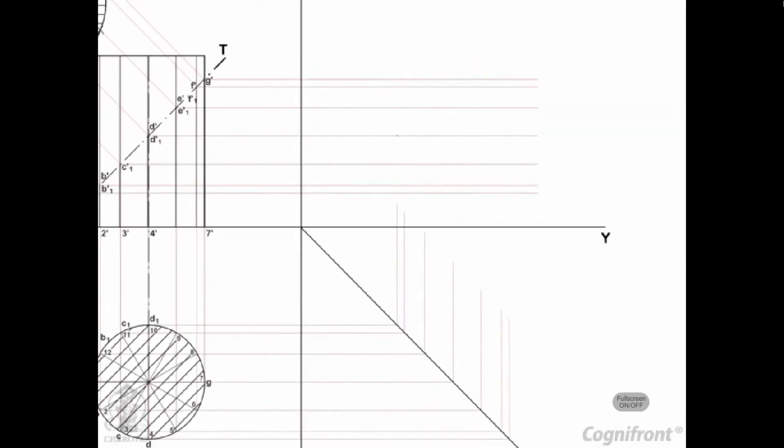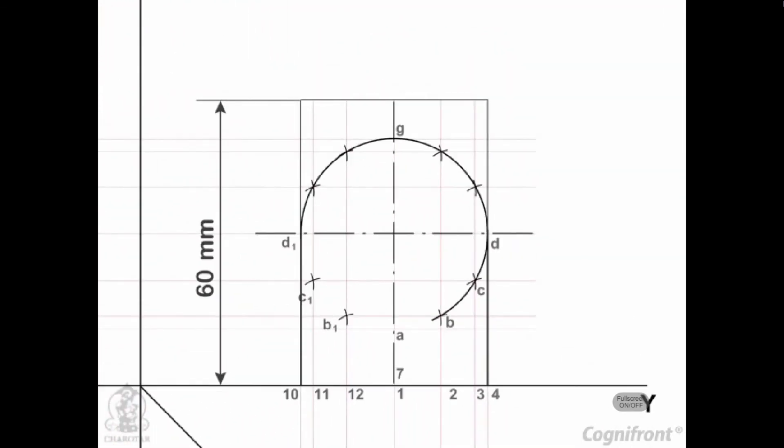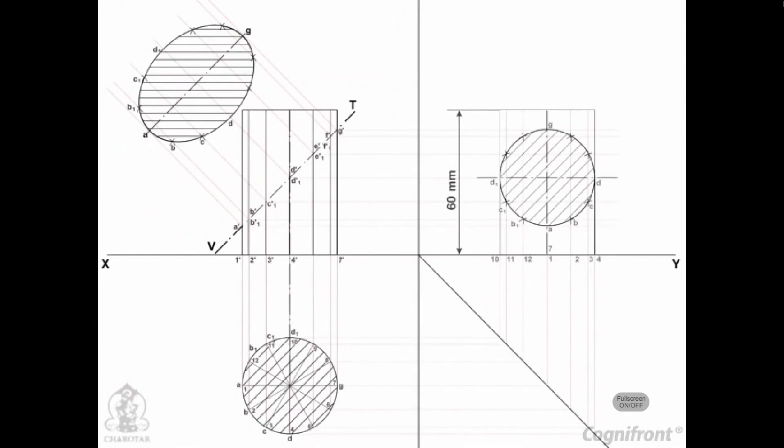Project the sectional side view as shown. The section will be seen as a circle because the section plane makes 45 degrees angle with XY.